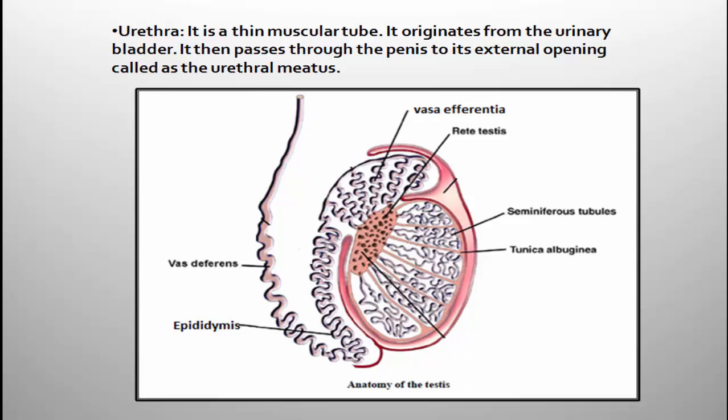Urethra is a thin muscular tube which originates from the urinary bladder. It passes through the penis — the external genitalia of the male reproductive system — and finally opens through an opening called the urethral meatus. So the complete sperm pathway is: rete testes → vasa efferentia → epididymis → vas deferens → ejaculatory duct → urethra → urethral meatus.